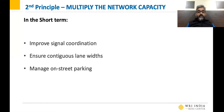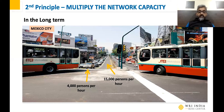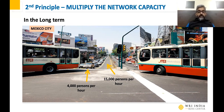Another way to multiply network capacity is giving priority to buses. In the image, two lanes of cars carry about 4,000 persons per hour, while one lane of buses can carry almost 15,000 persons per hour. Delhi did try bus rapid transit but didn't get the required results — but that doesn't mean the concept is flawed. We have to contextualize it into our setting and rework the whole model on how to give priority to buses, because a huge number of people in Delhi are still moving on buses.